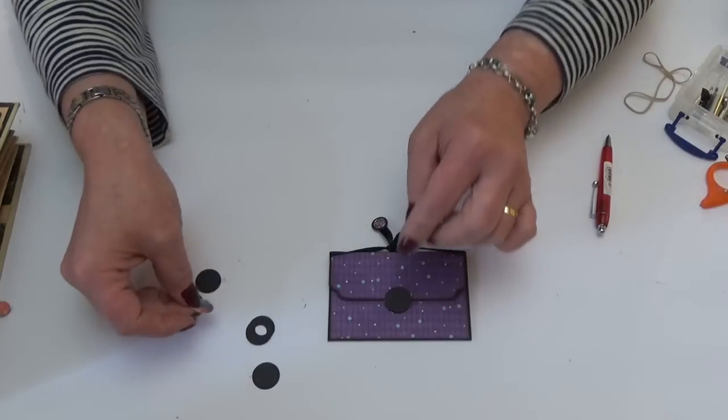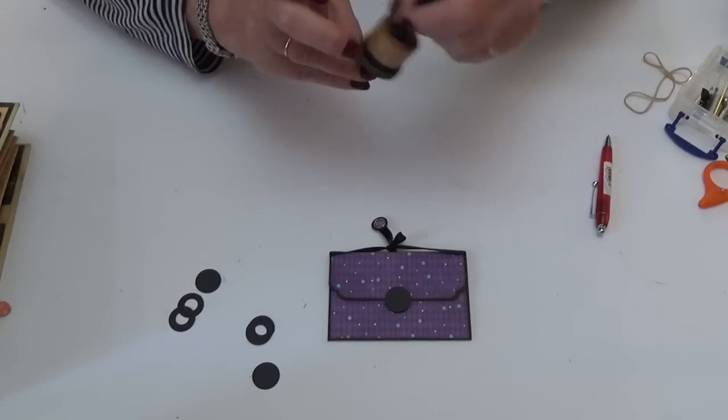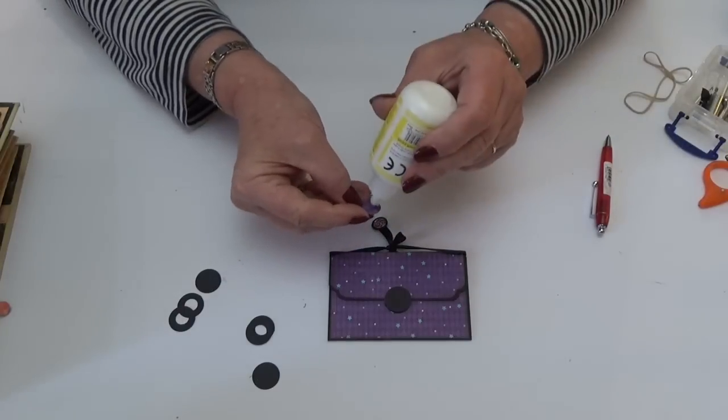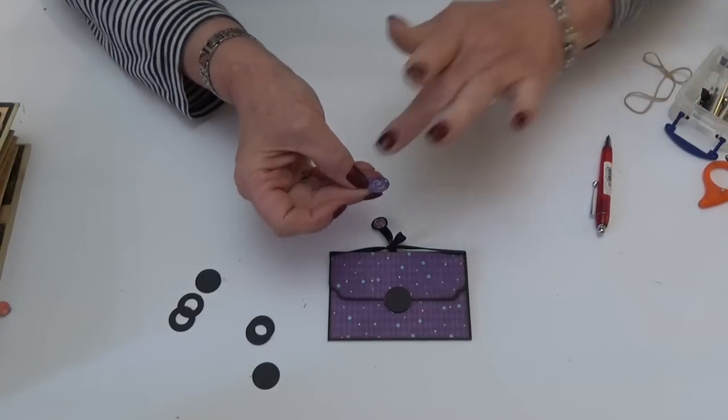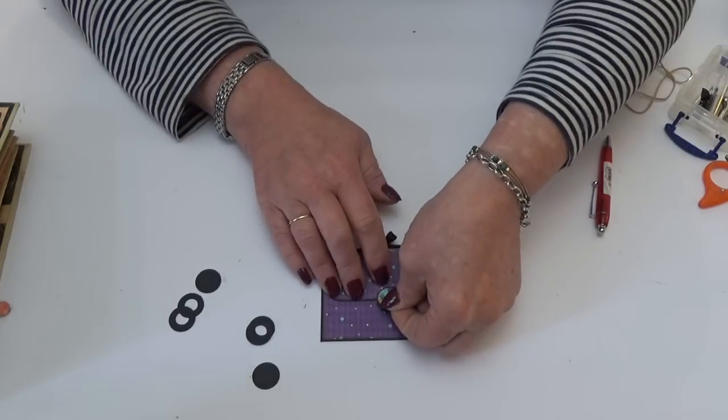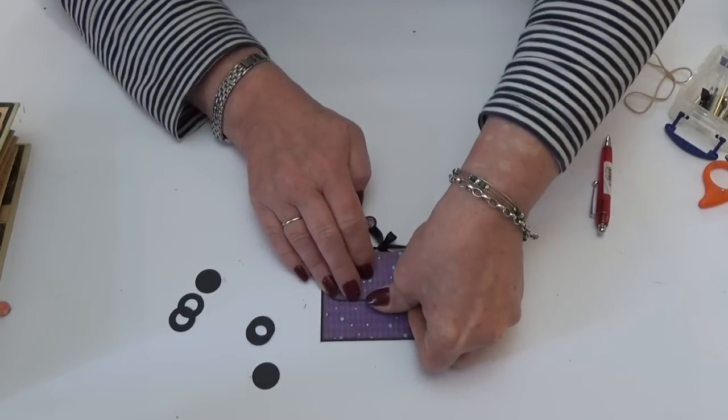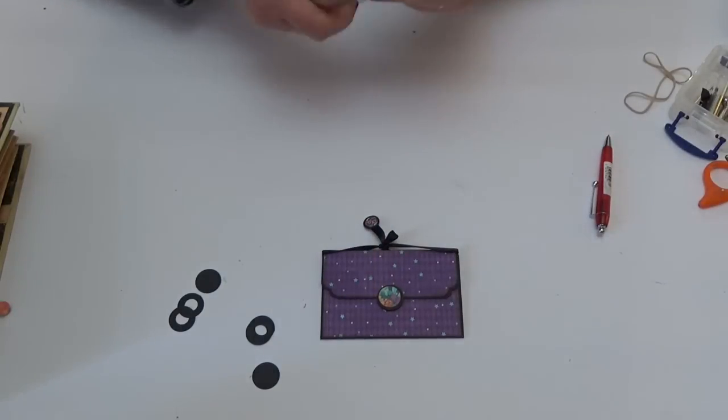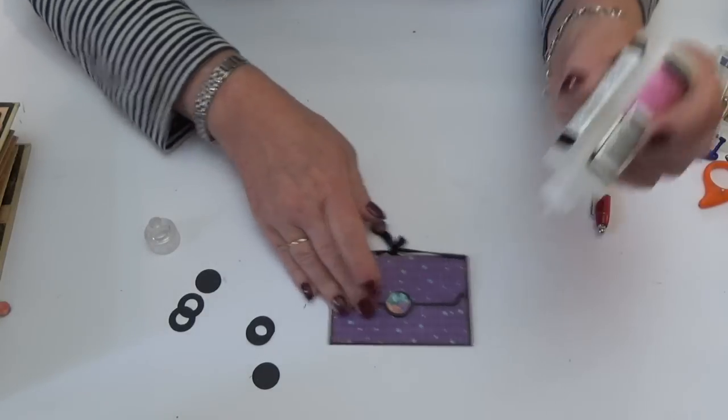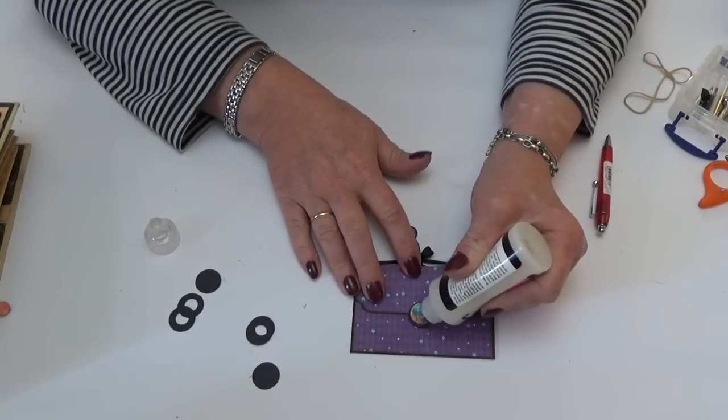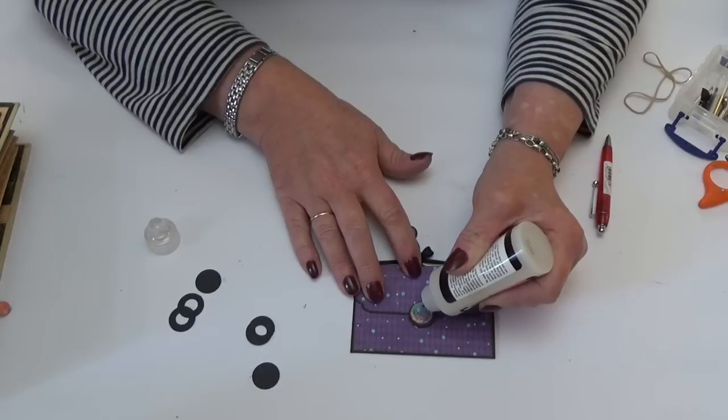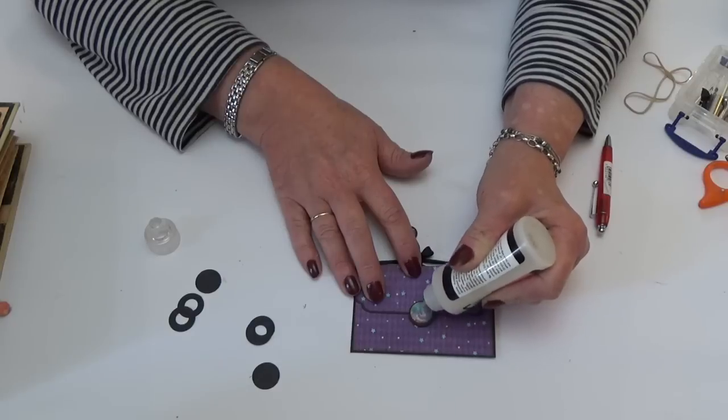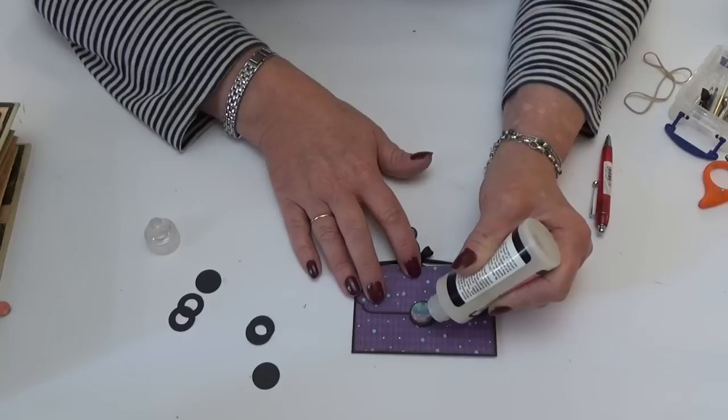And then you can add a little paper circle onto the top, a little bit of glossy accents and a little bit of glitter if you want to bring up your element. So if I add the glossy accents, I just add it so that it covers just the paper, but I put quite a lot in the center so that it makes a really lovely button when it's all dry.